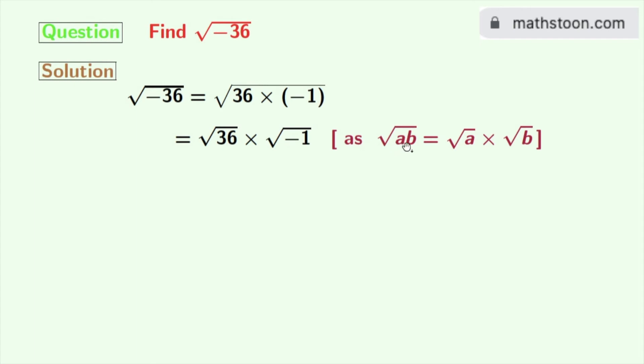Using the rule of square root of ab is equal to square root of a times square root of b. Here a is 36 and b is minus 1.